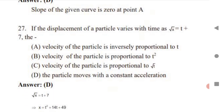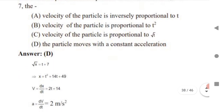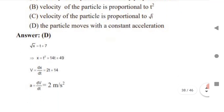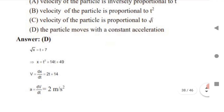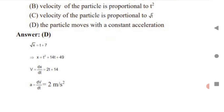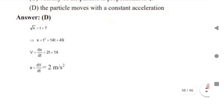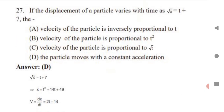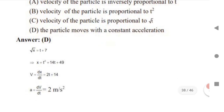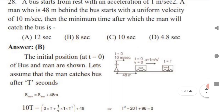Next: the displacement of a particle varies with time. The question states √x = t + 7. To find acceleration, you need velocity first using v = dx/dt. Rearranging: bring x to the other side, square both sides using (a + b)² expansion, differentiate to get velocity, then differentiate again to get acceleration. The acceleration comes out constant, confirming the particle moves with constant acceleration.